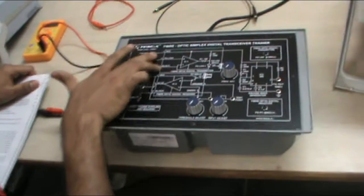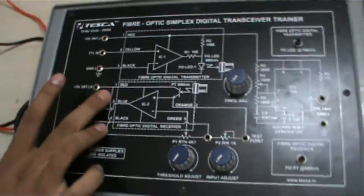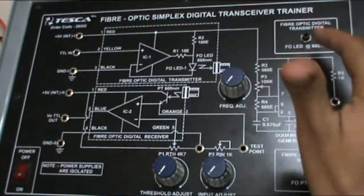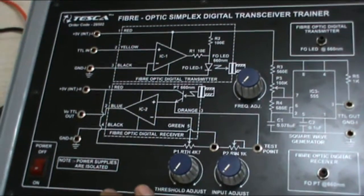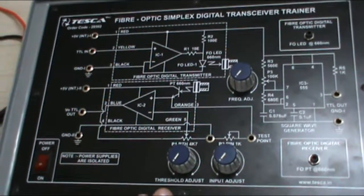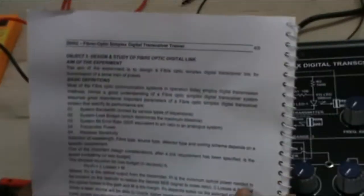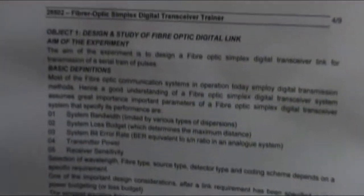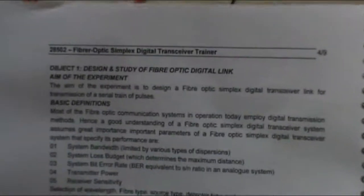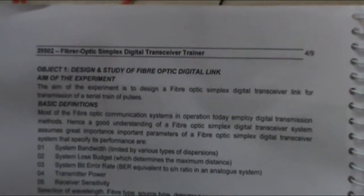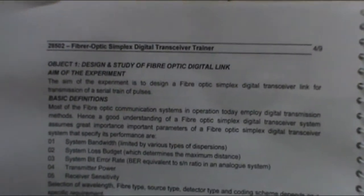This is the transmitter part. This is the receiver part. Here we connect our fiber optic cable. Now let me show you the connections for the experiments. Our first experiment's object is design and study of fiber optic digital link. The aim of the experiment is to design a fiber optic simplex digital transceiver link for transmission of a serial train of pulses.